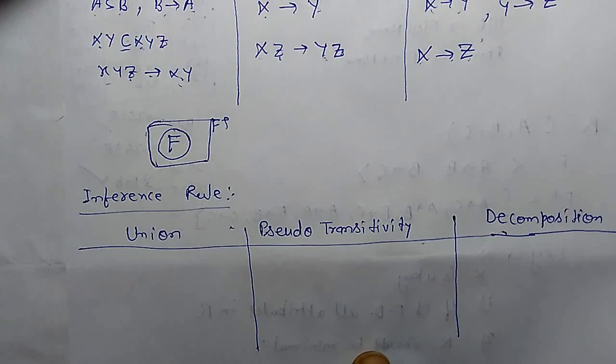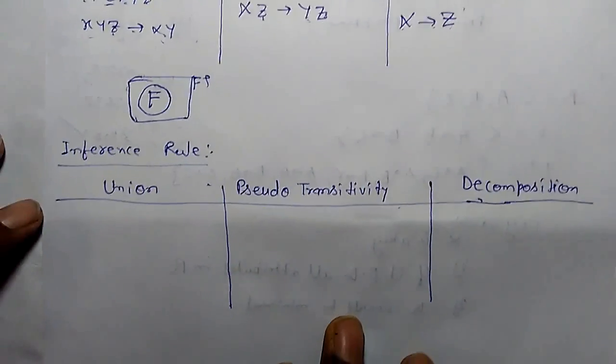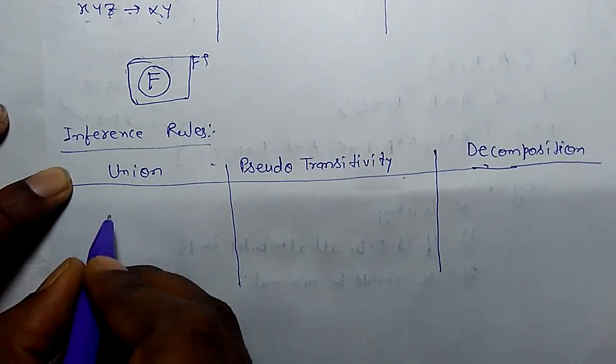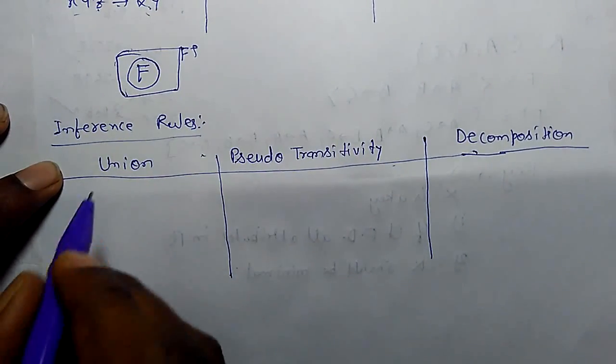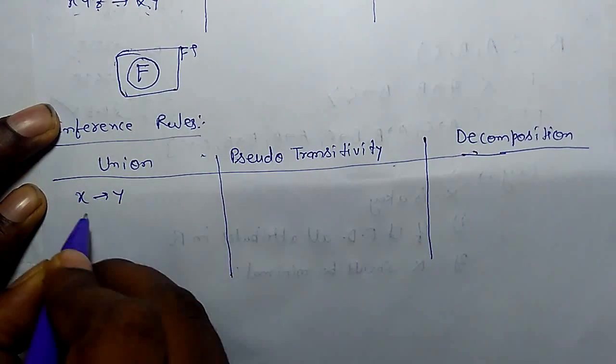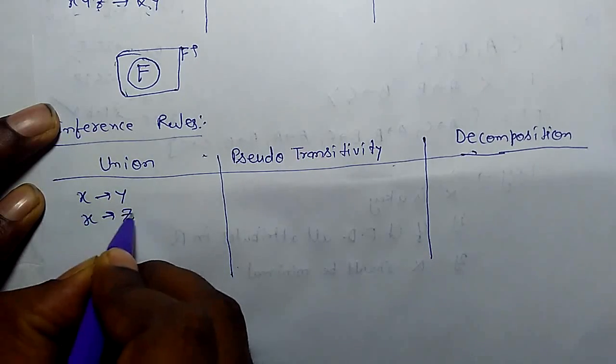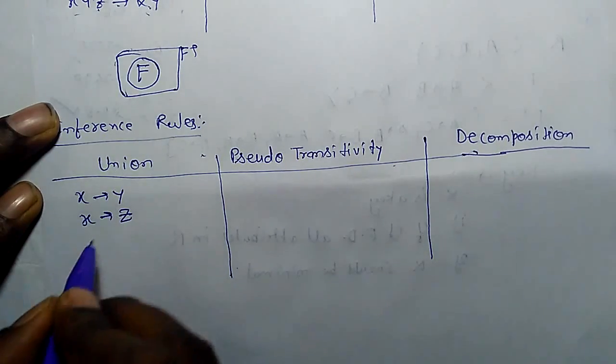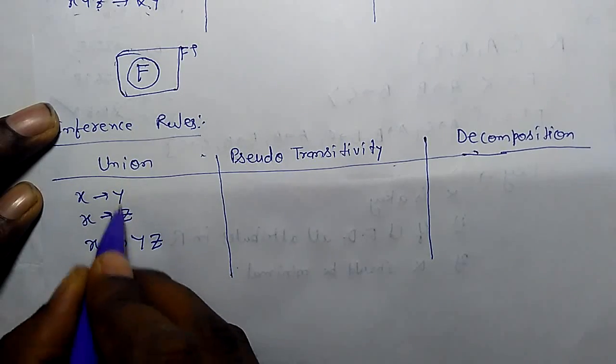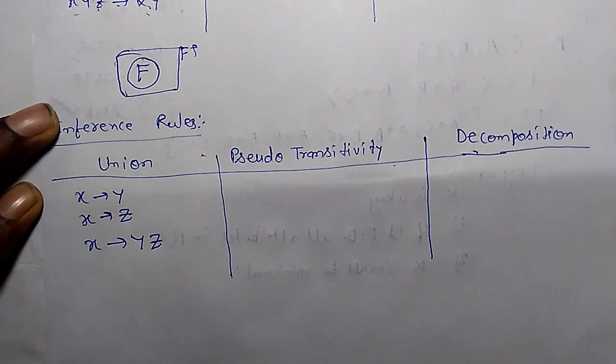Some inference rules are also available. Union: if x functionally determines y and x functionally determines z, through the union we can say x functionally determines y, z. We add these two attributes on the right hand side.